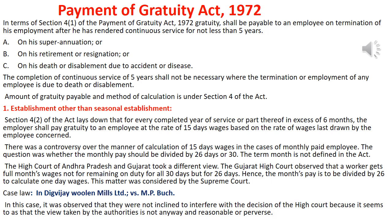The amount of Gratuity is calculated according to Section 4 of the Act. There are two kinds of establishments: seasonal establishments and establishments other than seasonal. Let us first look into the establishment which is other than a seasonal establishment.